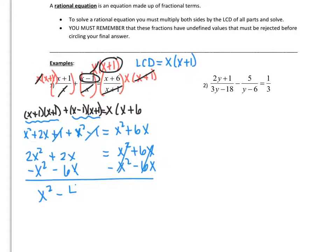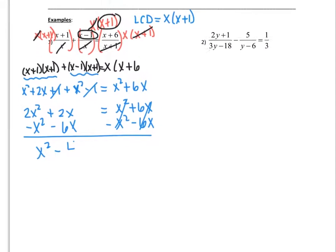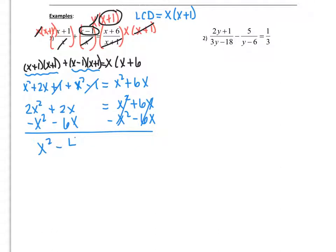But I also want you to remember that these are fractions. And fractions have undefined values that must be rejected before circling your final answer. So if you look back at the original problem, there's an x on the bottom and an x on the bottom. So if x is 0, this fraction is undefined. So that means I'm going to reject that one because 0 makes it undefined. And if x were negative 1, negative 1 plus 1 would make it undefined. But I didn't get negative 1 over here, so this is the one that I get to keep.